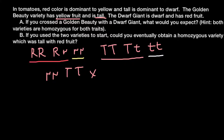The Dwarf Giant is dwarf and has red fruit. Since both traits are homozygous, we choose RR for red color and tt for dwarf. So the genotype of Dwarf Giant is RRtt. Now we have both parents listed in the parental generation.